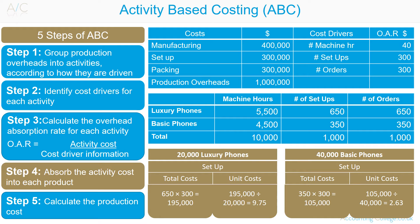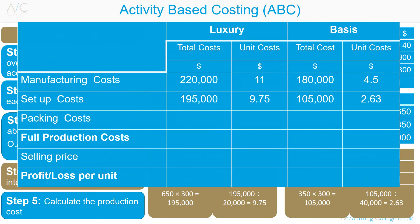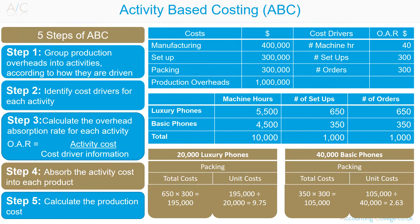To get the per unit packing cost for luxury phones, divide by 20,000 units produced. For packing of basic phones: take the 350 orders, multiply by the overhead absorption rate for order costs of $300, then divide by 40,000 units produced to get the per unit cost.